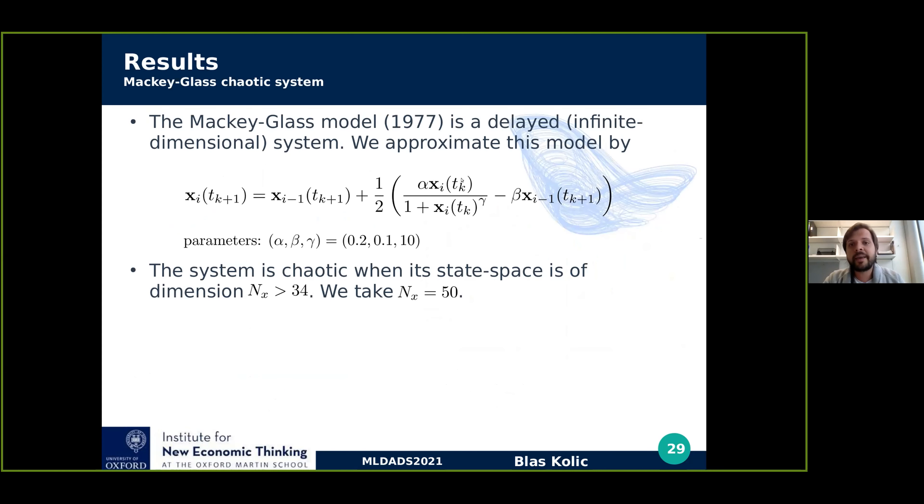Now this is just an illustration of how it works. Now we're going to go for a little more complex system with a higher dimensional space, which is going to be the Mackie Glass model, which is a delayed infinite dimensional system. And we approximate this model by this set of rules. Basically, this gives us the evolution of the component i of the microstates as a nonlinear function of its neighbors and its value on the past time.